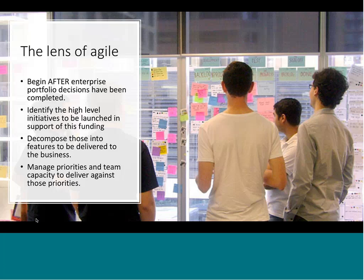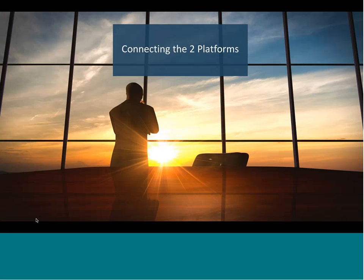This creates a strong bond between the business and the delivery team so the business has a clear understanding of what and when the teams will deliver. We want to have a link between the business and development where the business communicates to the teams in the form of an initiative — this is what I've funded, these are the teams, this is what I need to focus on — and then the teams use features as that bridge to help the business understand what they're delivering overall.